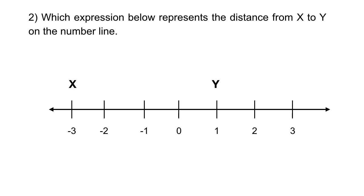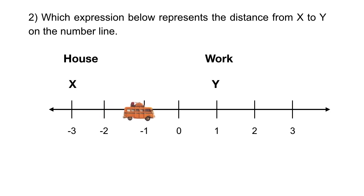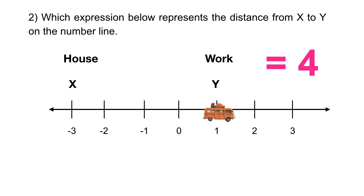Let's really simplify this — they're asking for the distance from x to y. Imagine x is your house and y is your work. You were on the subway and you wanted to know the distance or how many stops there were between your house and your work. One stop, two, three, and four. So the distance is equal to four. That is the answer to the question.